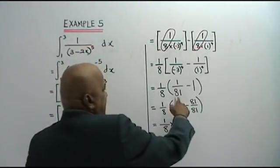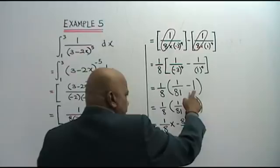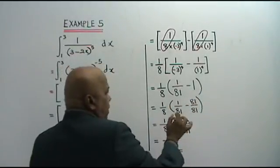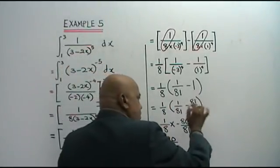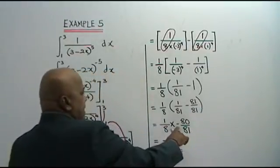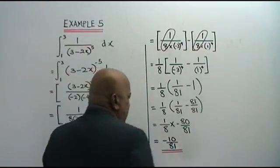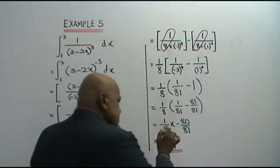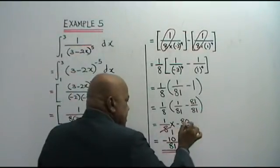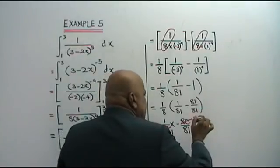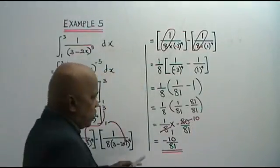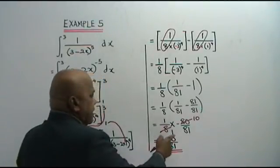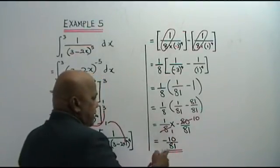Now 1 over 81 minus 1. What is 1? That is 81 over 81. So 1 over 81 minus 81 over 81 gives you negative 80 over 81. Now we cancel: 1 times 8 over negative 10 times 8. So this is your answer: negative 10 over 81.